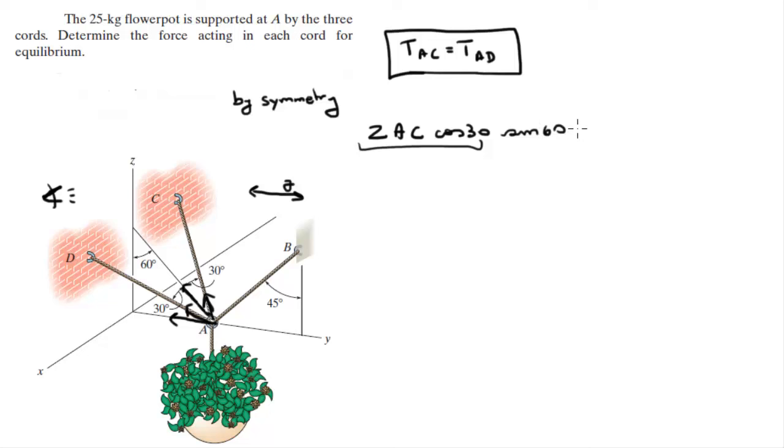Minus AB, which is this one right here, times sine of 45, and that will give you this vector right here, is equal to zero because this is equilibrium. So if you plug all this into your calculator, you can get that 1.5AC equals 0.707AB, which means that 2.12AC equals AB.